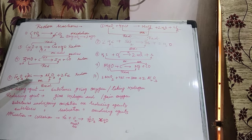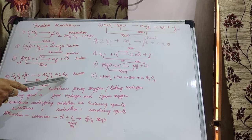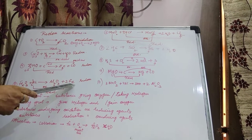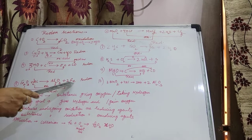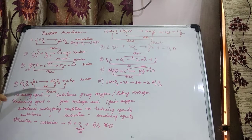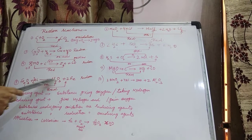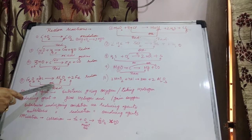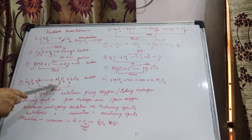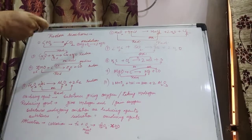Next example: Fe₂O₃ plus Aluminium gives Al₂O₃ plus Fe. Fe₂O₃ is converted into Fe — removal of Oxygen — so that is Reduction. Aluminium is converted into Aluminium Oxide (Al₂O₃) — addition of Oxygen — so that is Oxidation. Therefore, Fe₂O₃ is getting reduced and Al is getting oxidized into Al₂O₃.